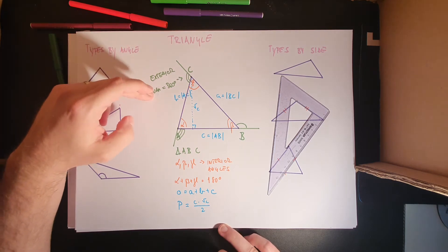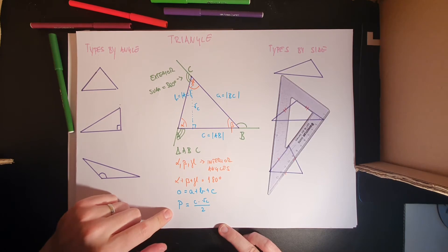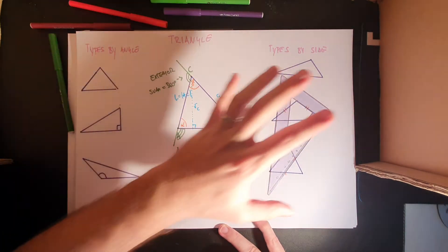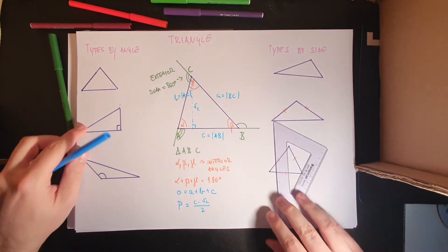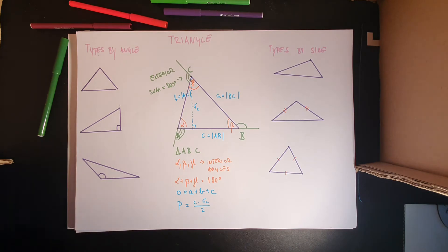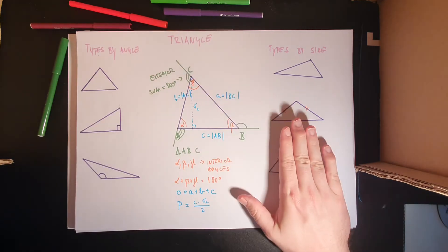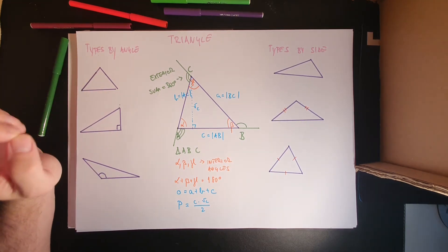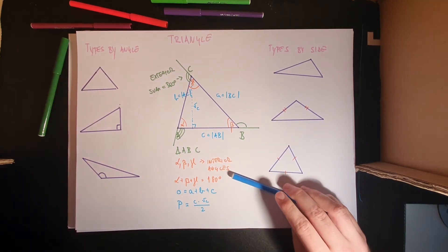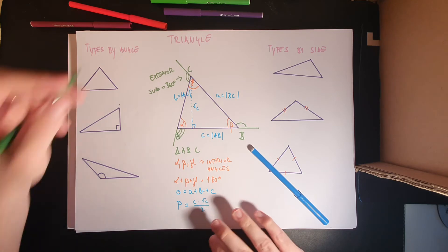The sum of interior angles, sum of exterior angles, perimeter, and area apply to any triangle. Now let's look at specific types. We can classify triangles by their angles or by their sides. By angles: the first type has all three angles acute, and it is called an acute triangle.